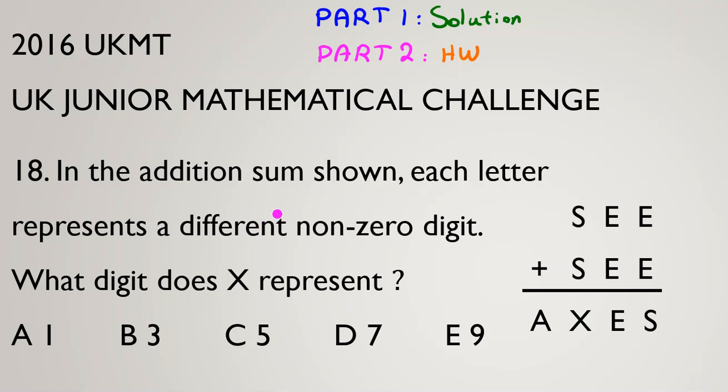Problem number 18. In the addition sum shown here, each letter represents a different non-zero digit. What digit does X represent? 1, 3, 5, 7, or 9. Let's see the axis problem.